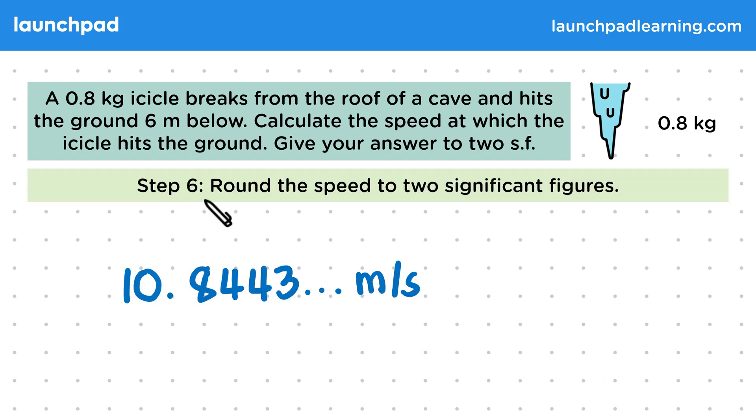Then for the final step, we want to round the speed to two significant figures. So our first significant figure is 1, our second is 0, and then the next value is 8. So we need to round our second significant figure to give us 11 meters per second.